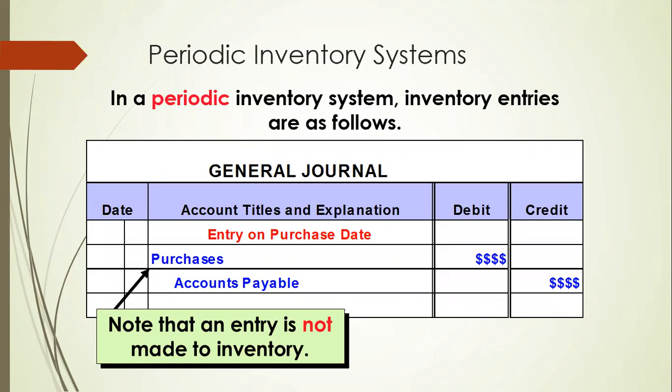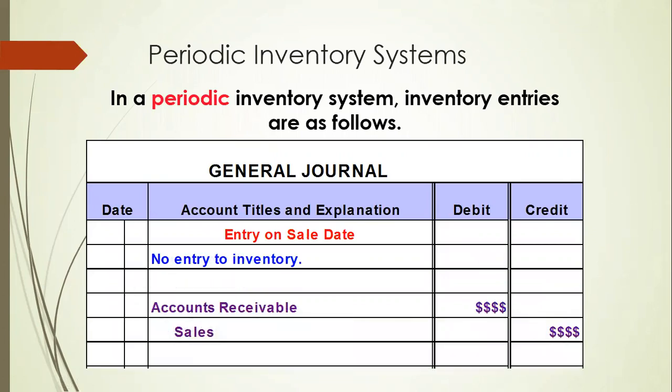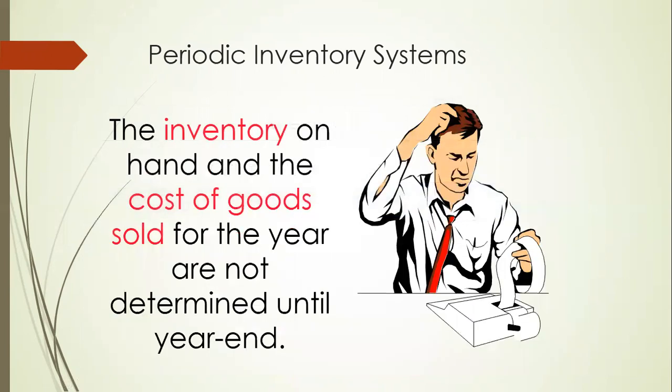In the periodic inventory system, whenever you purchase inventory, the general journal entry will be: Purchases debit and Accounts Payable credit. In the perpetual inventory system, you debit Inventory and credit Payable. On the sale date in the perpetual system, you debit Cost of Goods Sold and credit inventory. But in the periodic system, no entry is made to Cost of Goods Sold at the time of sale — only the selling price is recorded with Accounts Receivable debit.